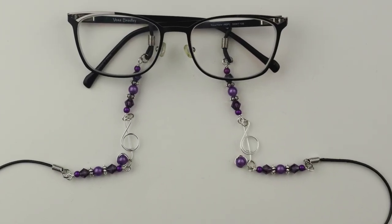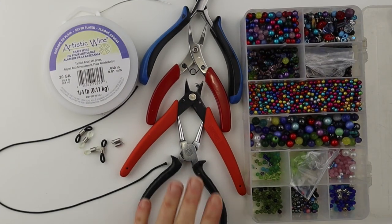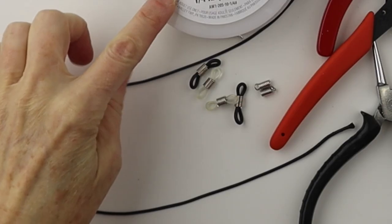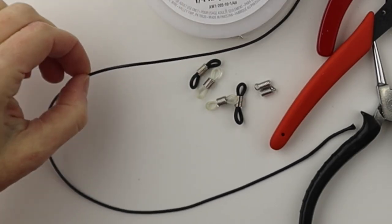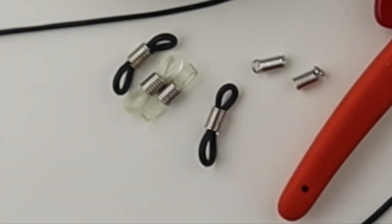Today we're making some beaded eyeglass holders. What you're going to need for this project are your tools, some beads, some 20 gauge wire, some black cord, some findings for the eyeglasses and some springs.